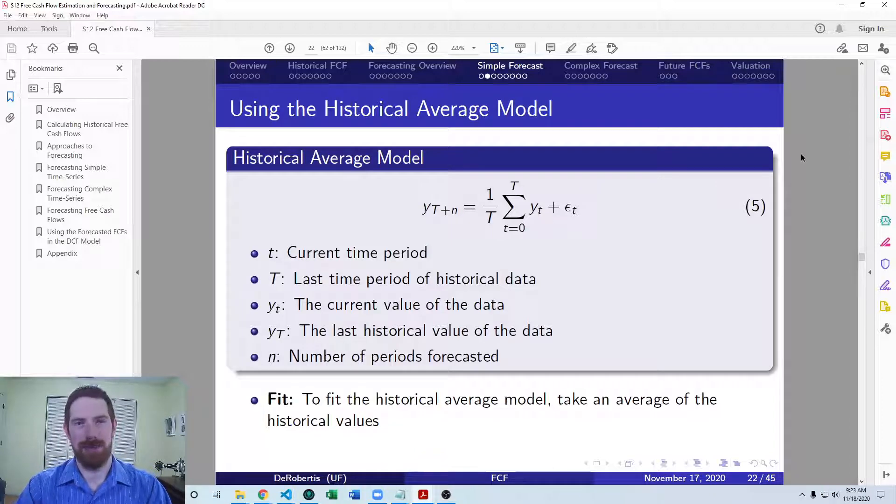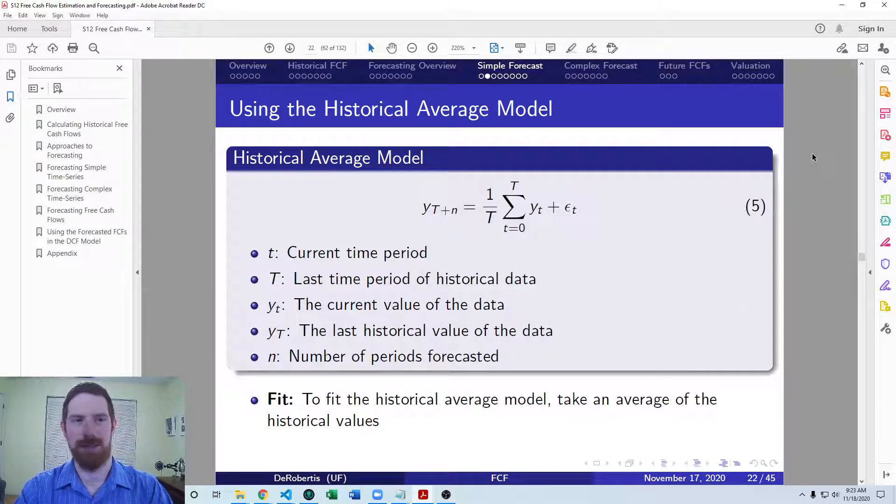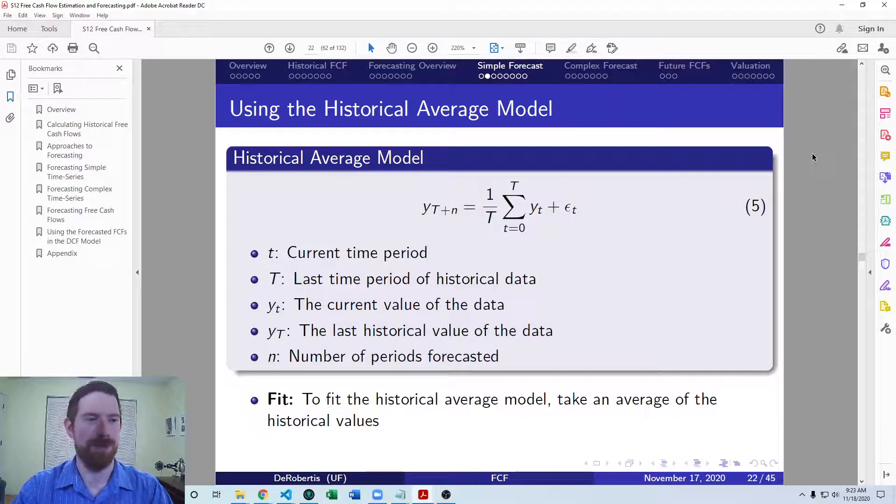The first model that we're looking at here is the historical average model. Basically all we're doing here is taking an average of the historical data and using that to predict the future. This is useful if there's not a clear trend up or down in the data, it's fairly constant but moving up and down, and you think it basically reverts to the mean.